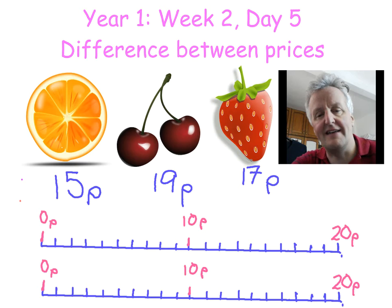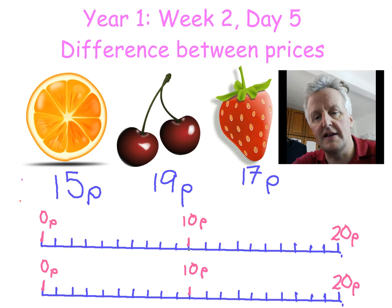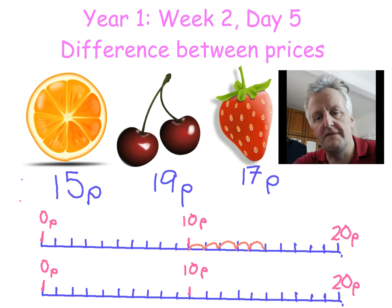Okay, so let's find out on my bottom number line where is 15. We start at 10, we jump: one, 11, 12, 13, 14, 15. So we know here it is — 15, 17.